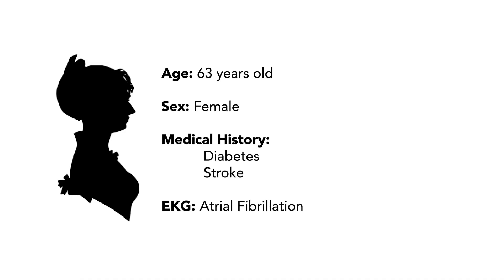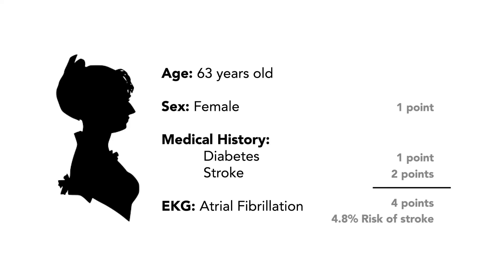Using the CHADS-VASc score, this patient gets 1 point for having diabetes, 2 points for a history of stroke, and 1 point for female sex category. She has a score of 4, putting her at approximately 4.8% stroke risk per year, and so she would be a good candidate for starting anticoagulation therapy.